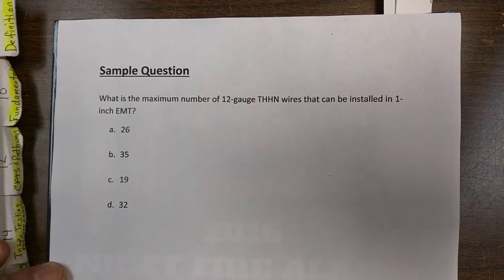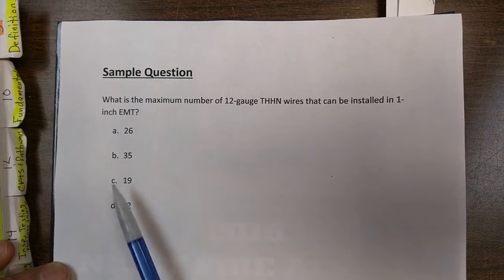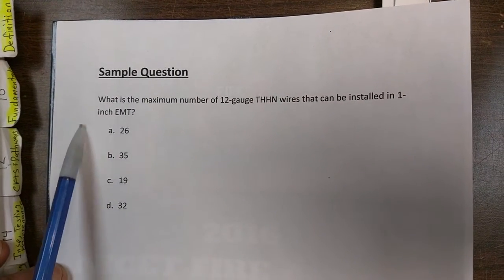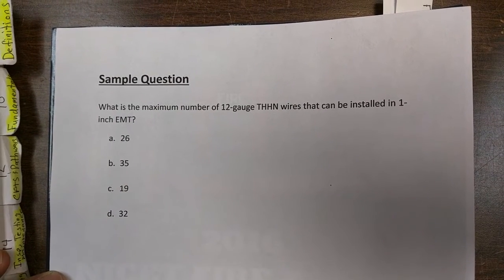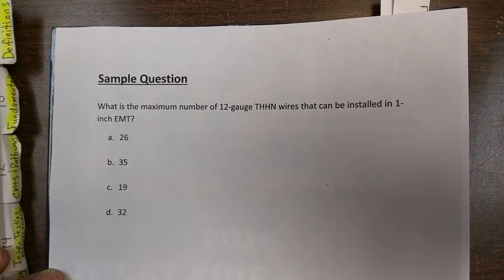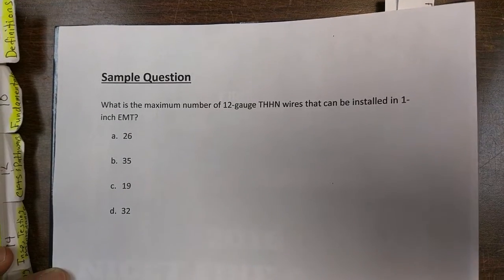Most guides out there will just present you with a question. For example, like this one: what is the maximum number of 12-gauge THHN wires that can be installed in 1-inch EMT? And those are the multiple choices you have.